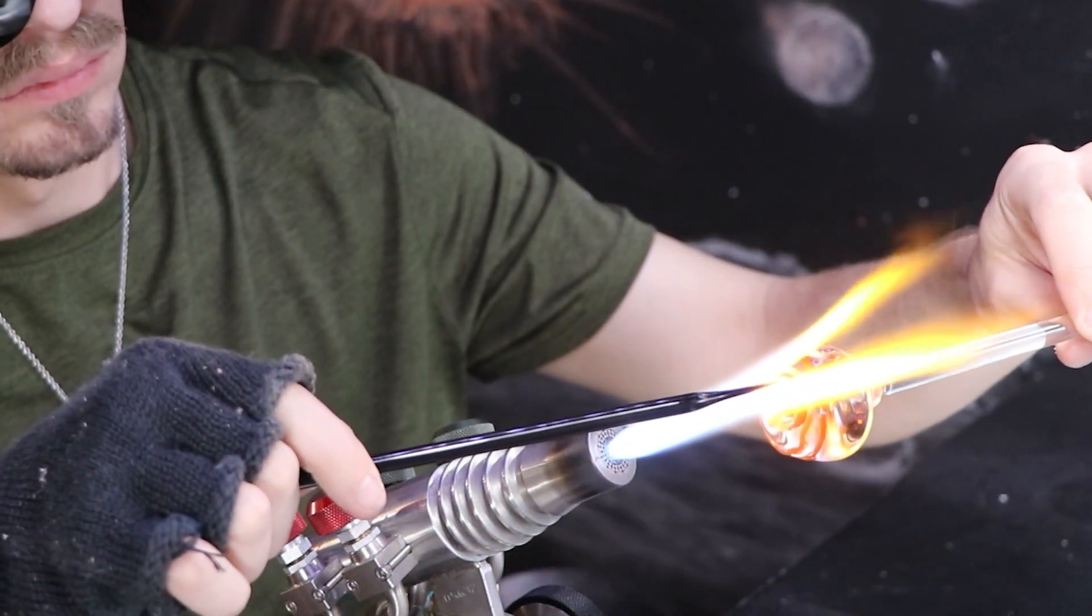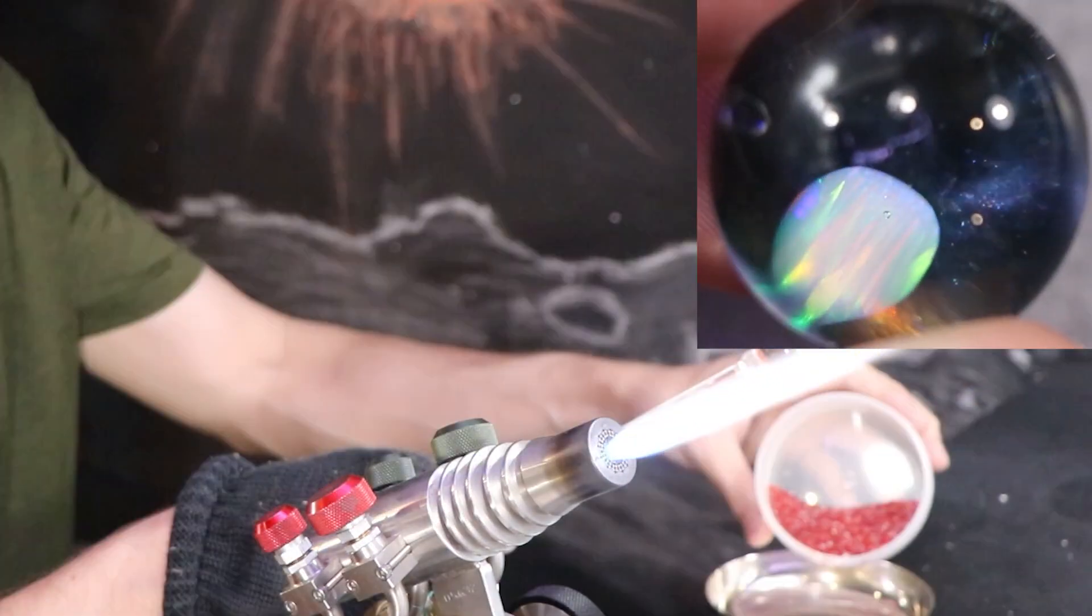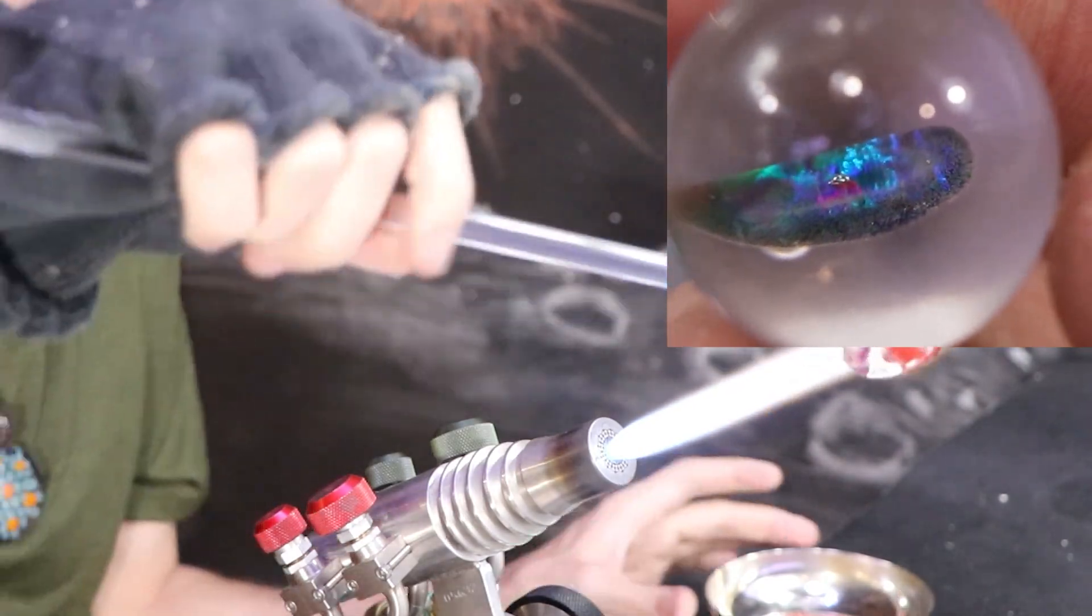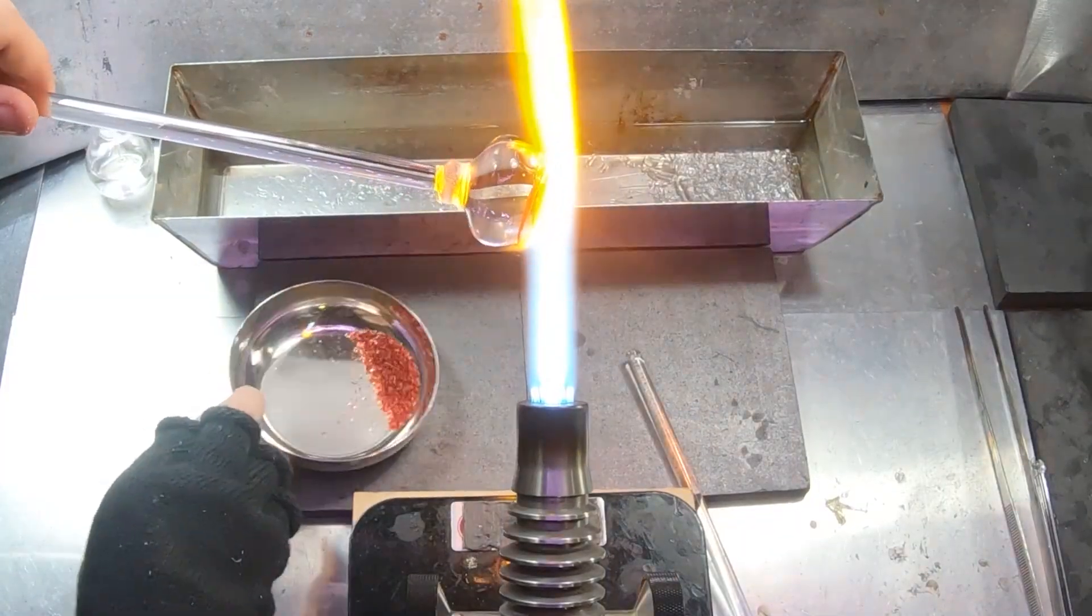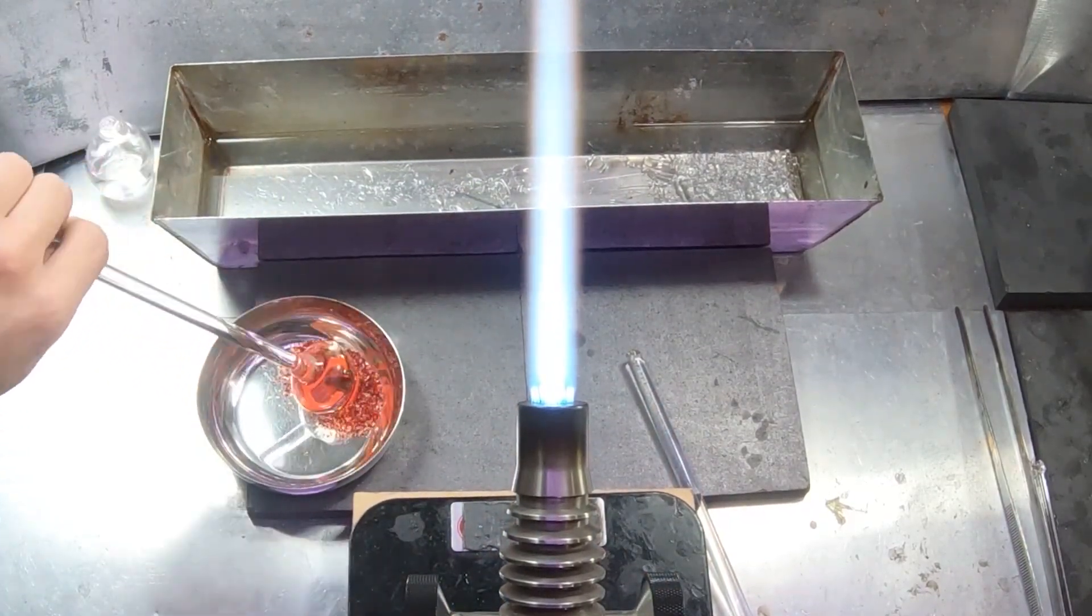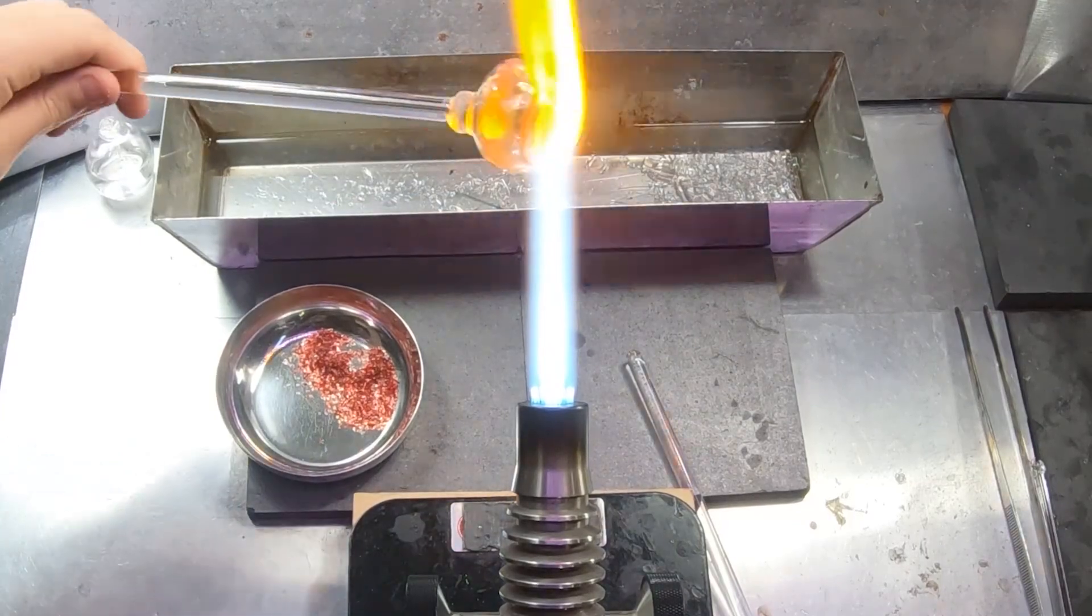When I made the marbles in the opal encasement video, I made sure to use a black backing on the white opal, and a white backing on the black opal. The fade to black didn't cover it up enough, so I'm going to add some red frit as well.